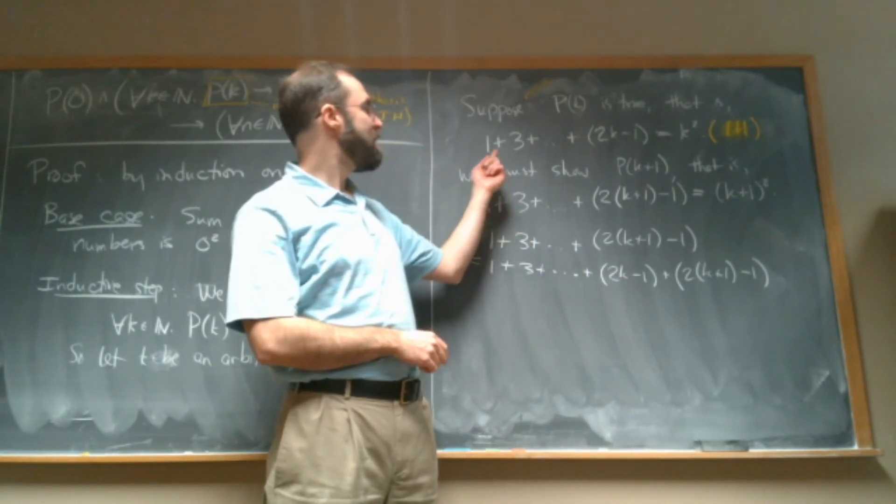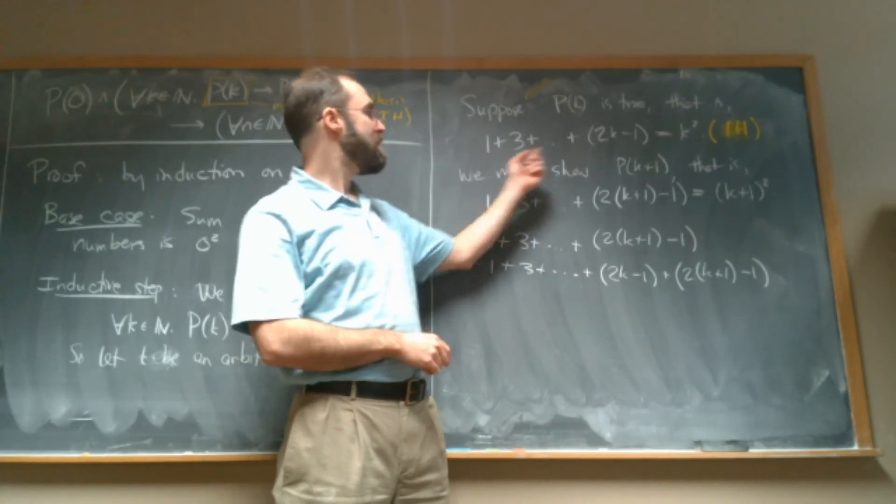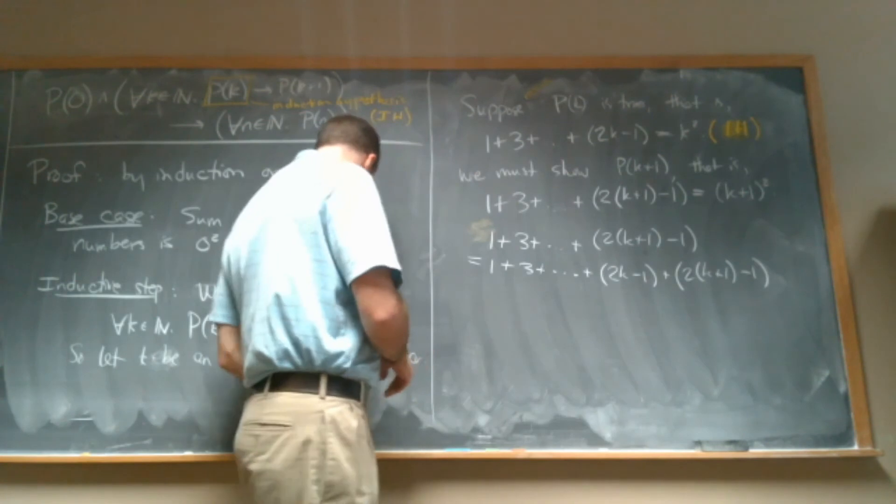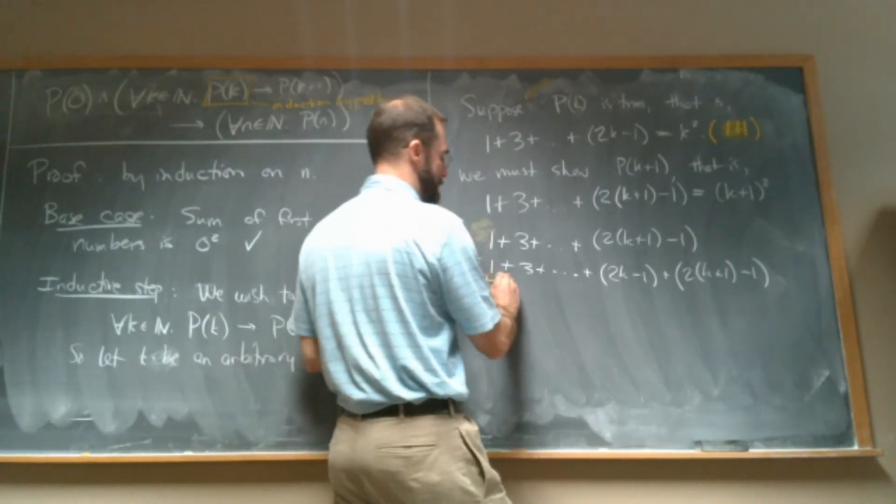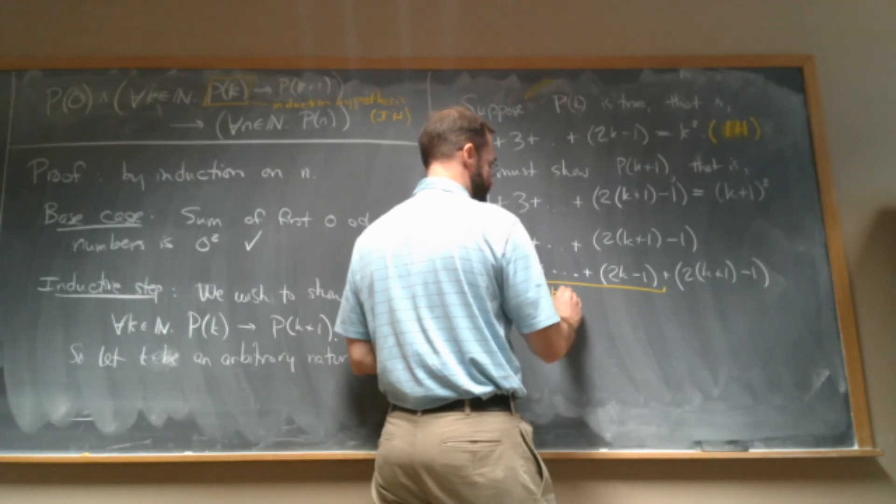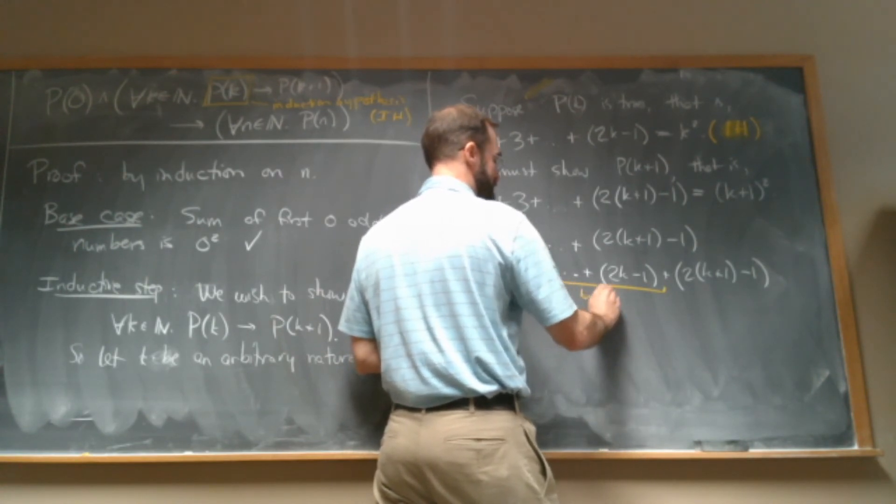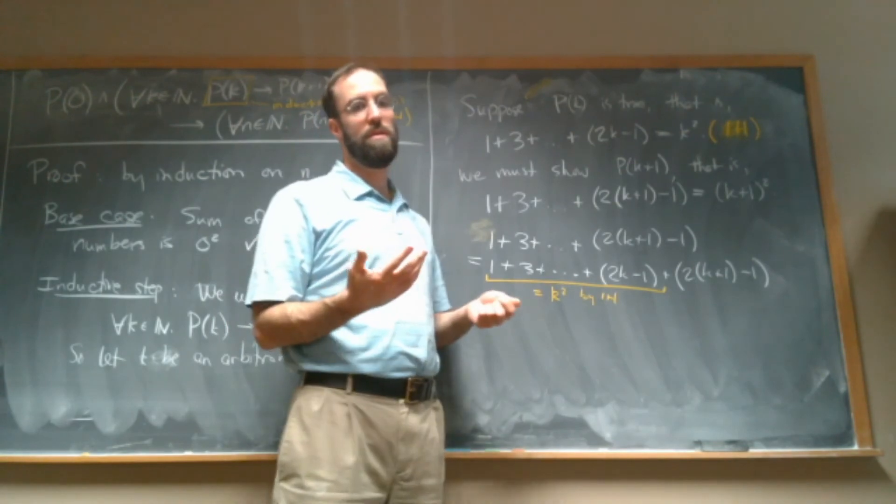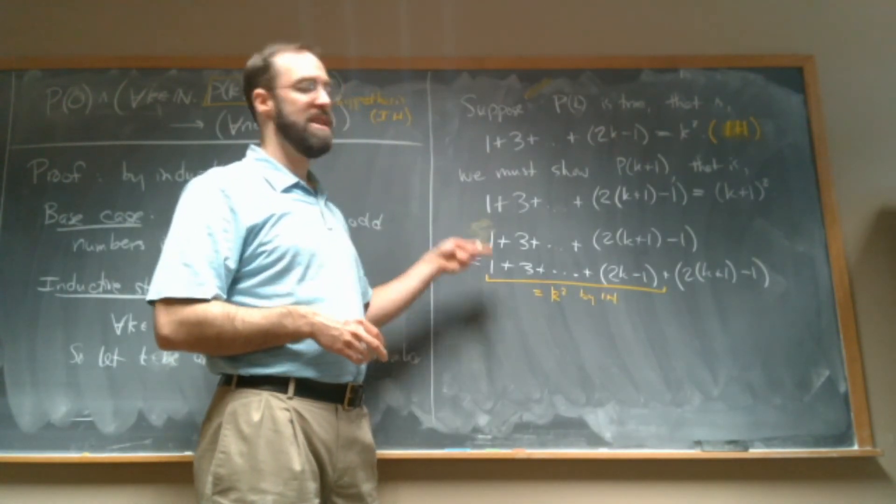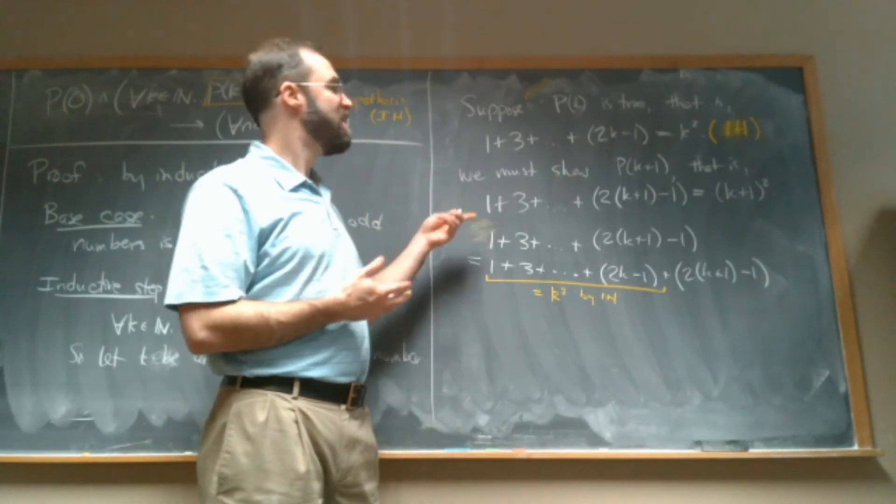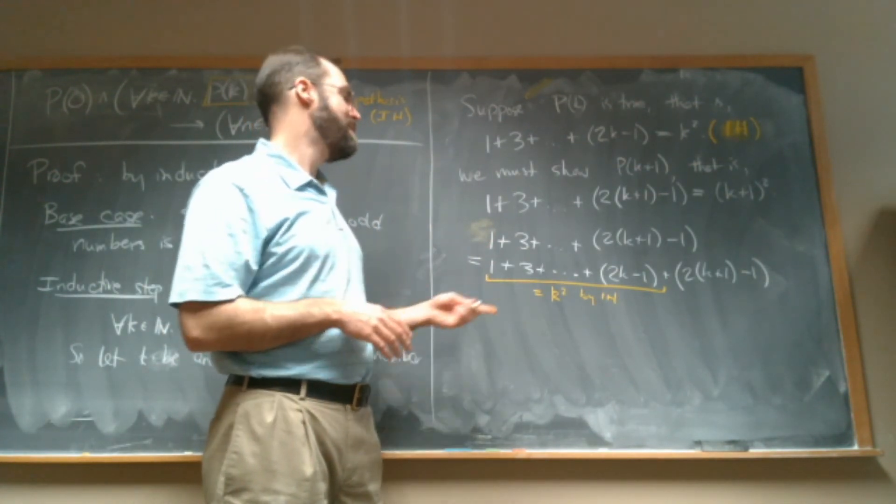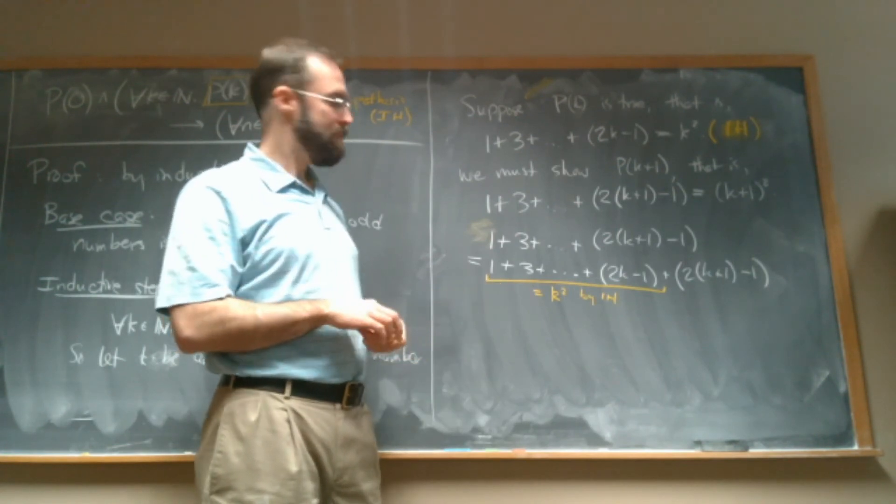Now, we were assuming, right, our induction hypothesis says that this part here is equal to k squared. So this equals k squared by our induction hypothesis. And in general proofs by induction, you're often going to start with something and you're trying to get it into a form where you can use your induction hypothesis. Because your induction hypothesis lets you assume something and you want to be able to use that fact.